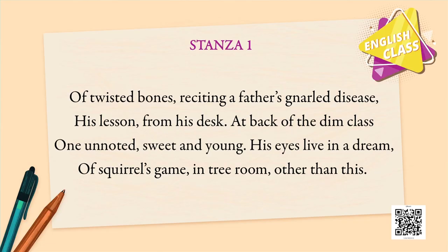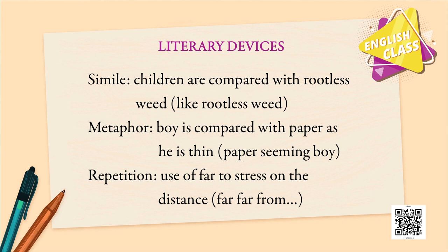From the first stanza the meaning is clear. Notice the words used: 'paper-seeming,' 'reciting a father's gnarled disease,' 'rat size,' 'squirrel's game in the tree.' The child wants that kind of freedom and free expression. In a poem, the use of words is the beauty. The poet has used many literary devices. For simile, children are compared to rootless weeds — 'like rootless weed.' For metaphor, the boy is compared to paper as he is thin — 'paper-seeming boy.' There is also repetition — use of 'far' to stress on the distance.